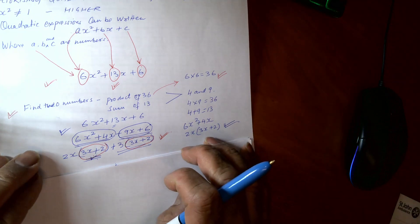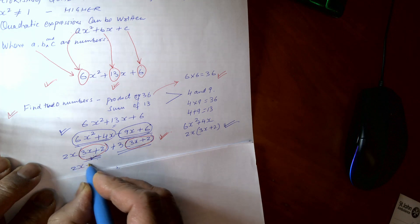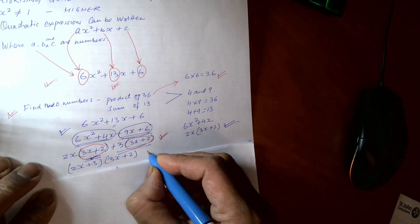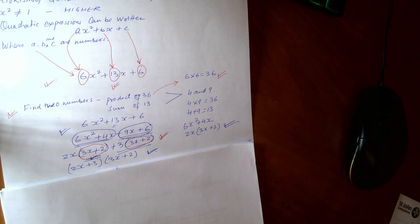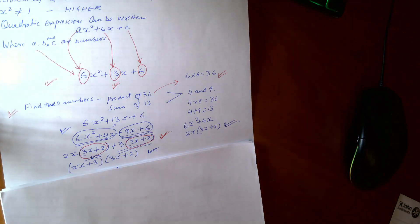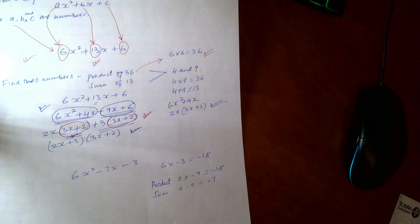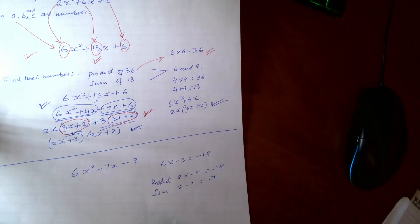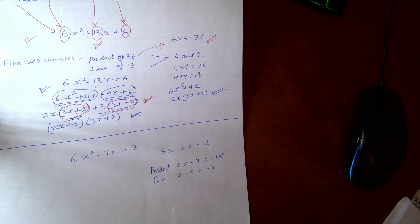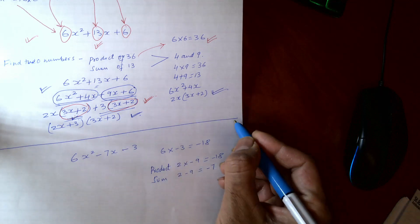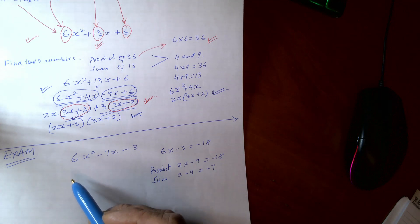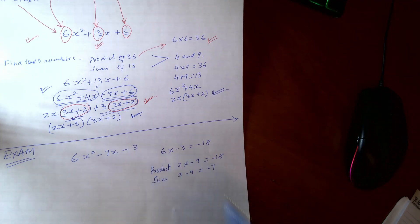Now rewrite this again. We got here 2x plus 3 and then 3x plus 2. So that is your answer. I hope you understand this. I'm going to move on further now with another example. So let's solve exam type questions. Sometimes you've got this kind of question in the exams as well. The question here, the quadratic equation here is 6x squared minus 7x minus 3.